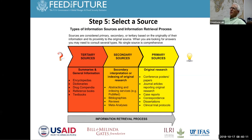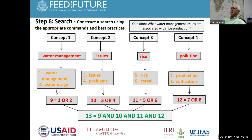This graphic shows what happens with the terms water issues, rice, and production. Concept one becomes water management or water usage, giving new results. Concept two is issues, which could be problems. Concept three is rice, which can be broadened to cereal. Production could also be cultivation. You end up with a total of 13 combined terms in this search, which you then analyze to determine if you need more or fewer terms.